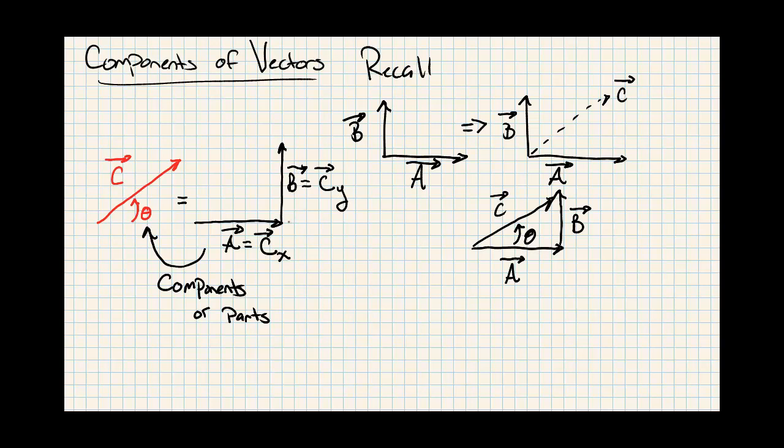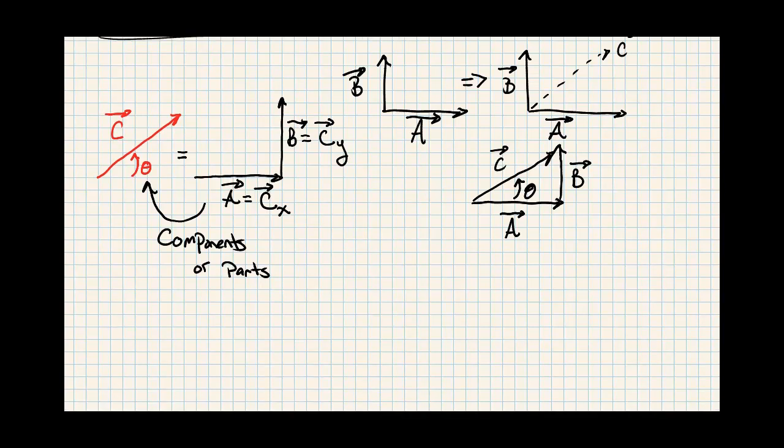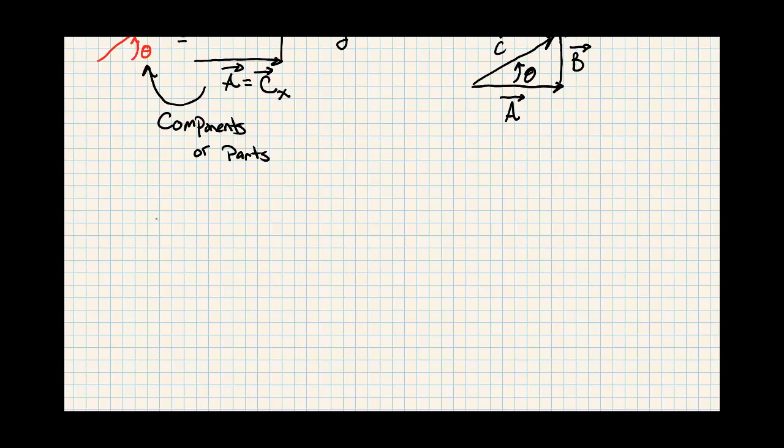So an important skill is going the other way. So instead of going from A and B to get vector C, can we go from vector C and get A and B back out of it? For example, if you are just given the x axis. Drawing my axis here. If we are simply given vector C. Here is vector C. Again, lifted at some angle. Angle of theta.